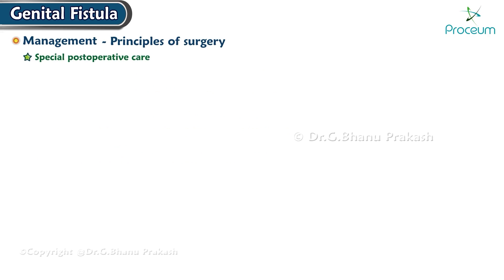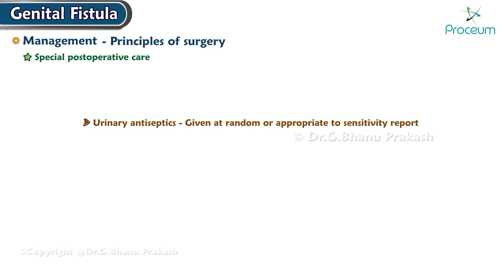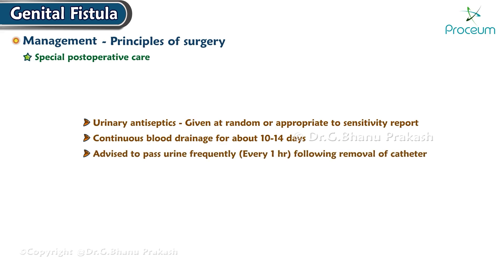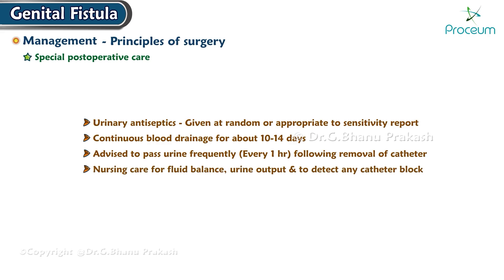Special post-operative care: Urinary antiseptics are given either empirically or according to sensitivity reports. Continuous bladder drainage for about 10 to 14 days is maintained. The patient is advised to pass urine frequently — approximately every hour — following catheter removal, with the interval gradually increased. Nursing care for fluid balance, urine output, and detection of any catheter block is needed.